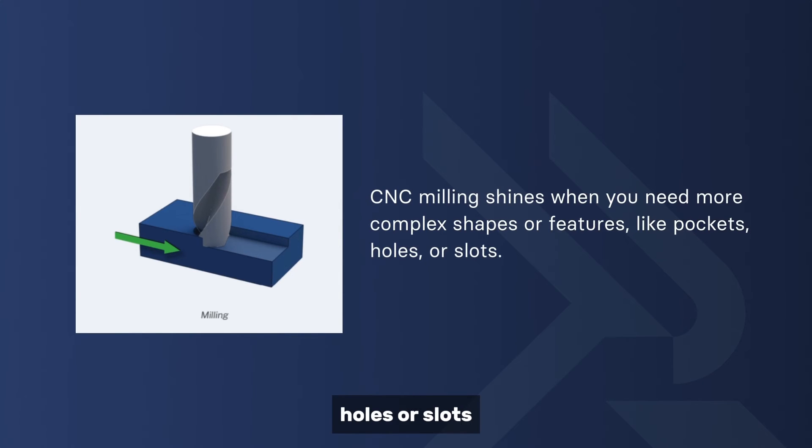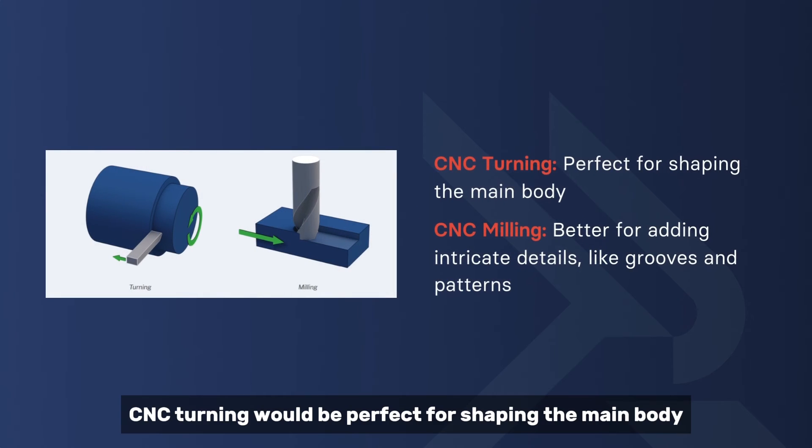On the flip side, CNC milling shines when you need more complex shapes or features like pockets, holes, or slots. Think of it this way: CNC turning would be perfect for shaping the main body, while CNC milling would be better for adding intricate details like grooves and patterns.